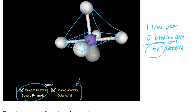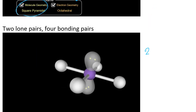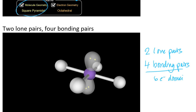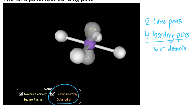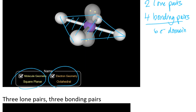If I remove another bond to get two lone pairs and four bonding pairs, I still have six electron domains so the electron domain geometry stays octahedral. But now, ignoring the lone pairs when considering the molecular geometry, I get a shape that is flat but square. So we call this geometry square planar.